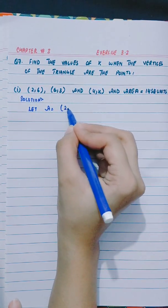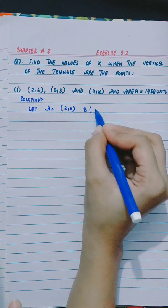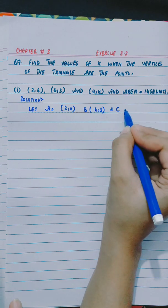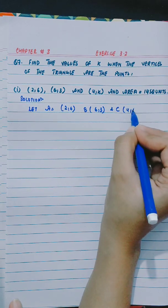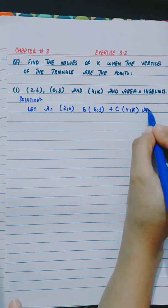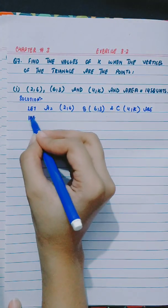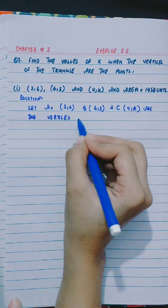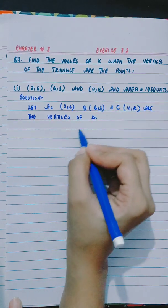Let A = (2,6), B = (6,3), and C = (4,k) are the vertices of the triangle.